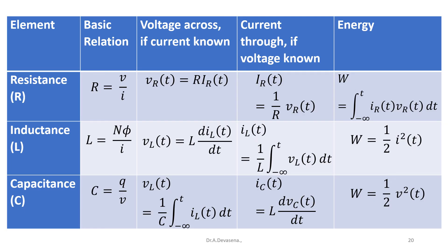The summary of the basic circuit parameters are given. For each element in this table, we have discussed about the basic relation: voltage across if the current is known, current through if the voltage is known, and the energy. This is indicated in the table.